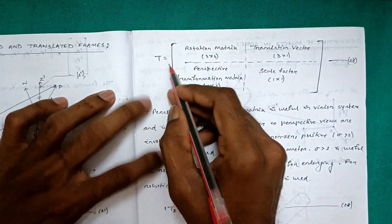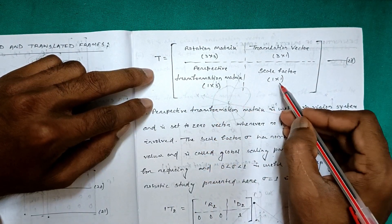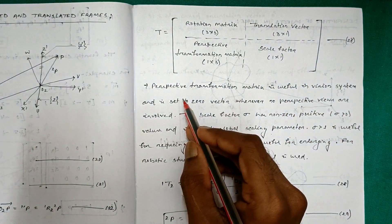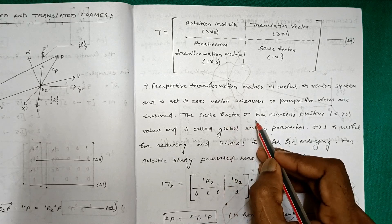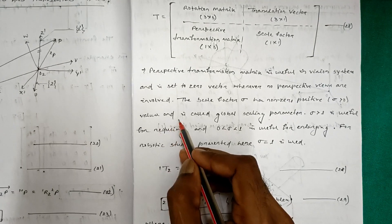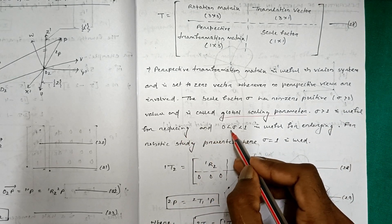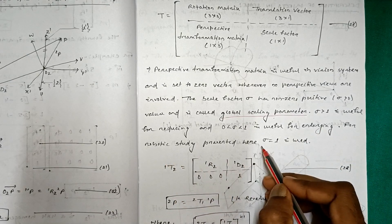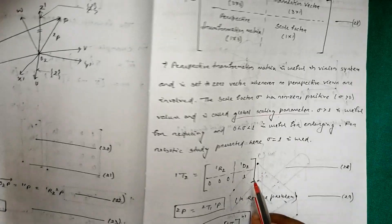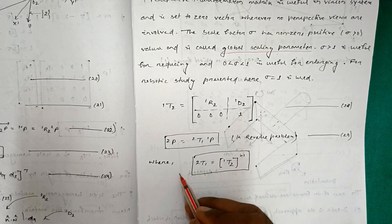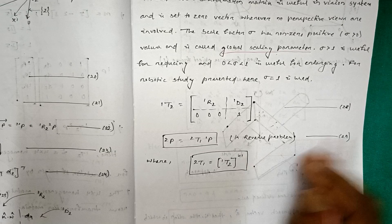The general transformation matrix T has four parts: a 3×3 rotation matrix, a 3×1 translation vector, a 1×3 perspective transformation matrix, and a 1×1 scale factor. The perspective transformation matrix is set to zero where no perspective views are involved. The scale factor sigma is a non-zero positive global scaling parameter: sigma greater than 1 is useful for reducing, and sigma between 0 and 1 for enlarging. For robotic study, sigma = 1 is used. The full matrix is 1T2 = [1R2, 1d2; 0 0 0, 1]. For the reverse problem, 2p = 2T1 · 1p, where 2T1 = (1T2)⁻¹.